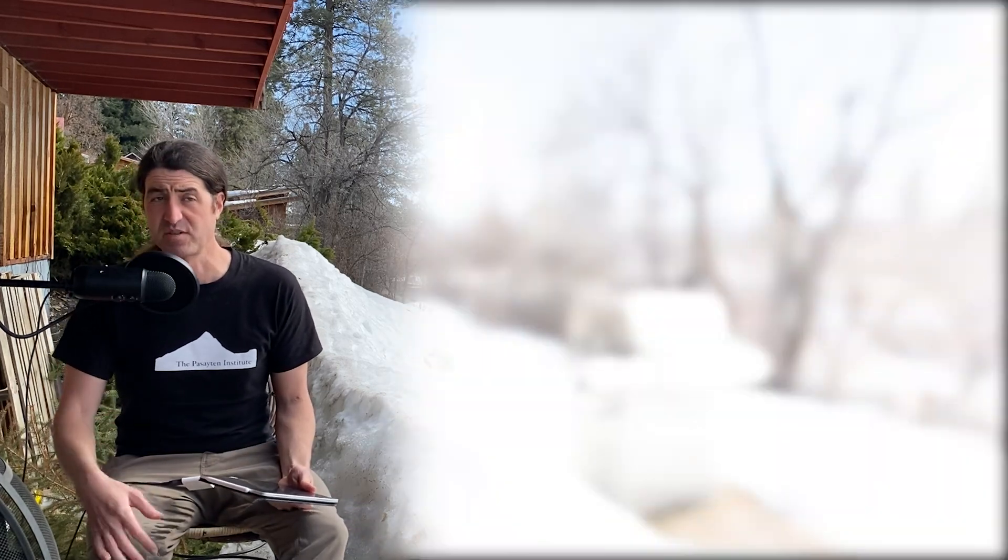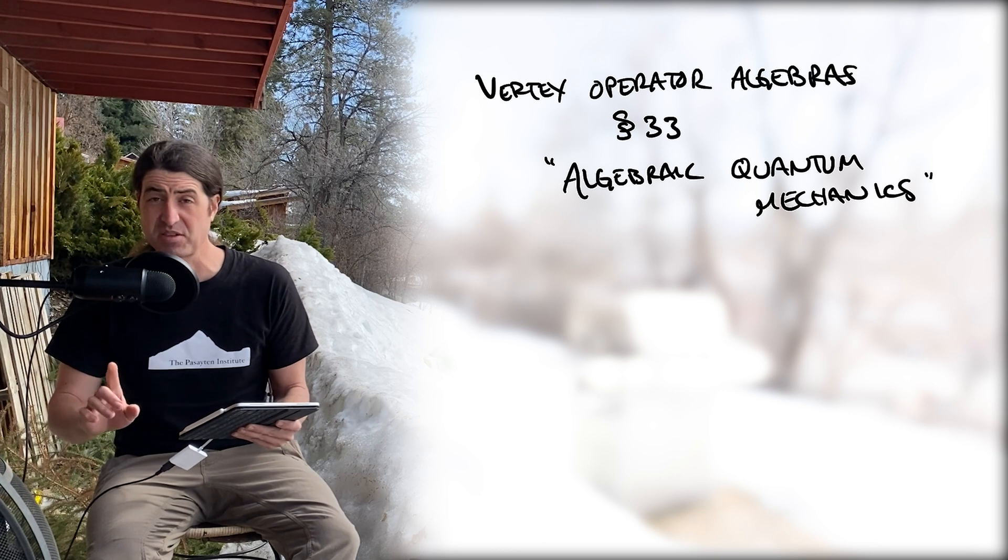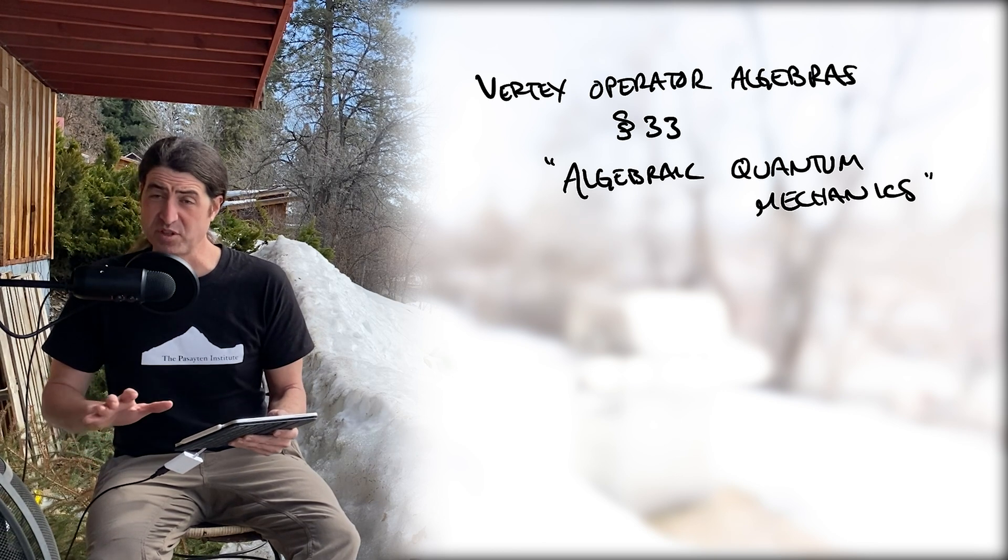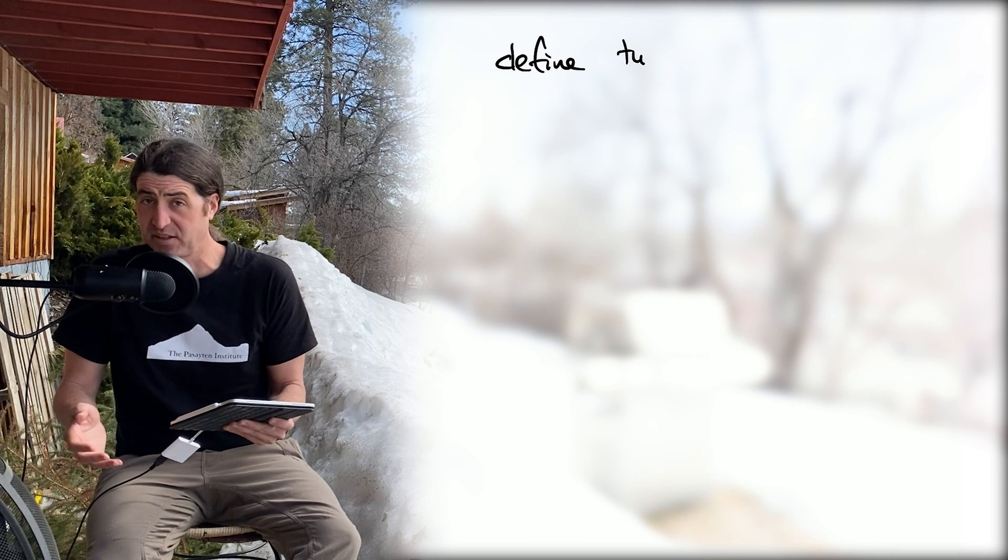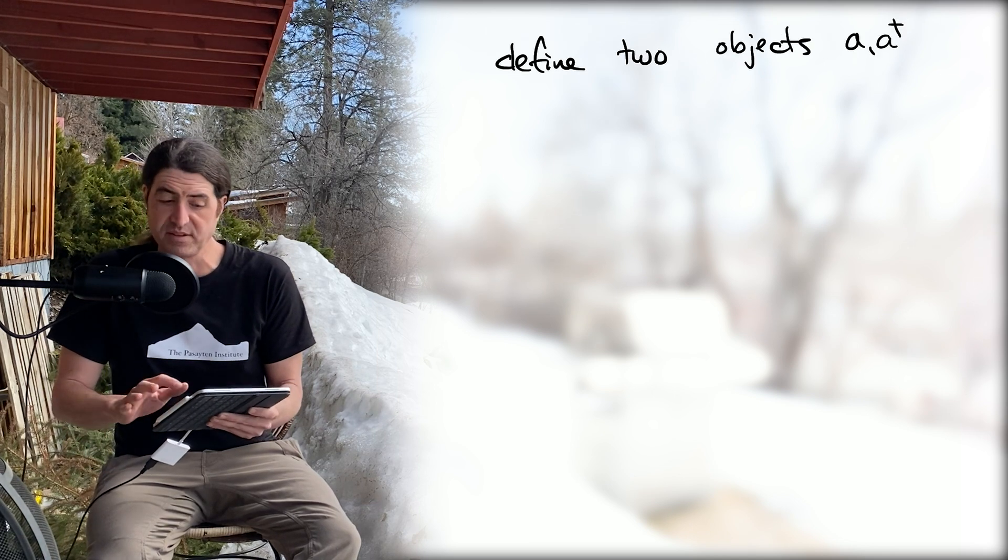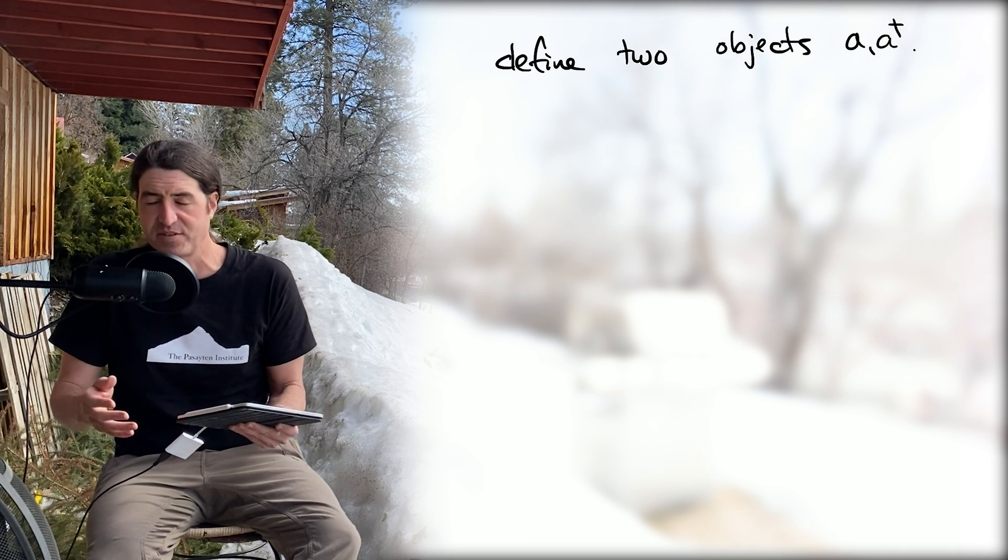If you're following along with our discussion of vertex operator algebras on this channel, you've probably already seen a bunch about the quantum harmonic oscillator. Section 3.3 is a pretty good reference for the material I'm about to discuss. If you haven't, no big deal—it's really simple. Just define two operators: a and a dagger.